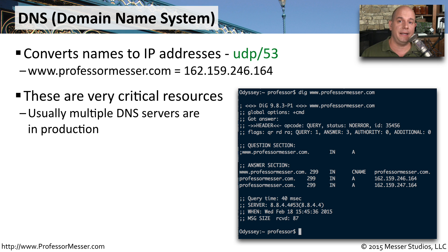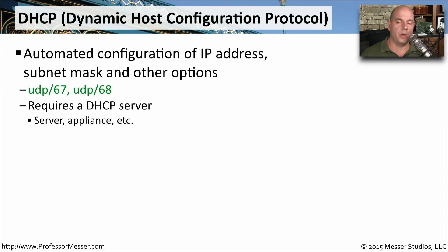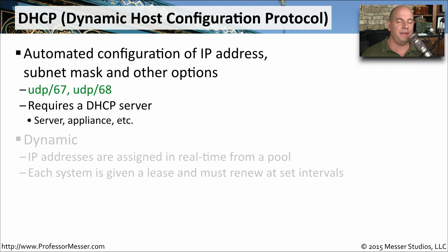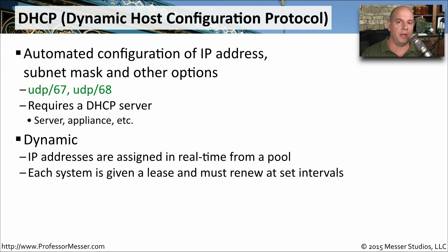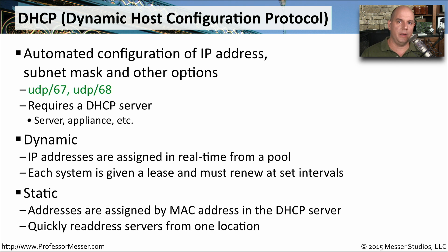Because of this, we tend to have many different DNS servers so that if one is having a problem, we can still perform name resolution using backup servers. The Dynamic Host Configuration Protocol, or DHCP, is used to automatically configure an IP address on a device. It uses UDP port 67 and UDP port 68. You may receive a dynamic IP address pulled from a large pool on the DHCP server, or you may have a static IP address assigned — the DHCP server can match your MAC address to a specific IP address assigned specifically for you.